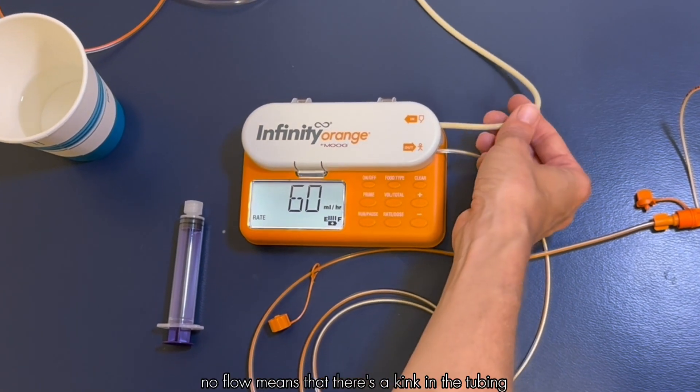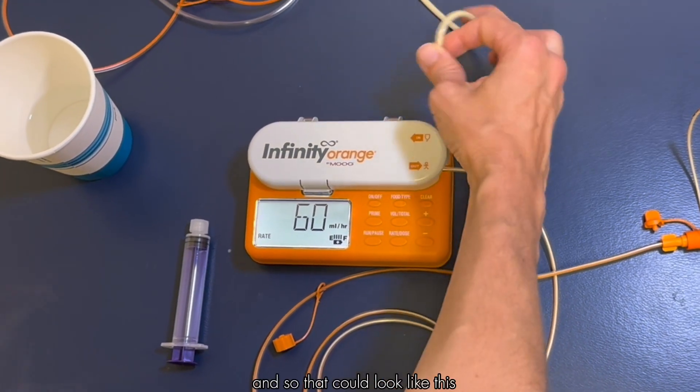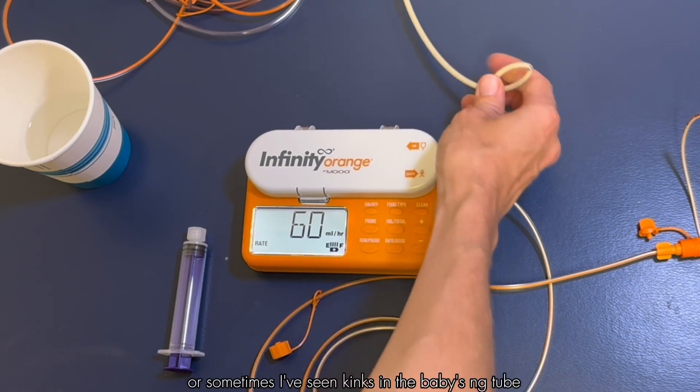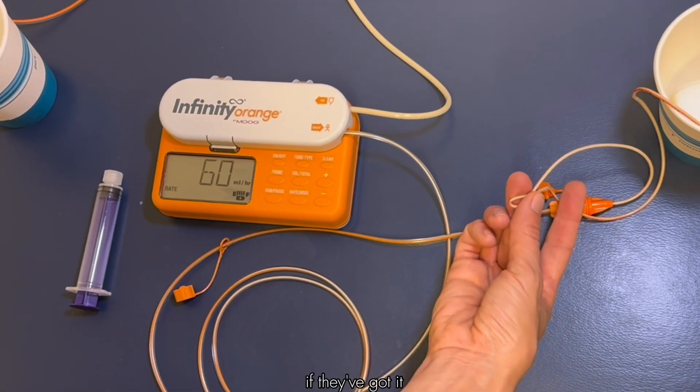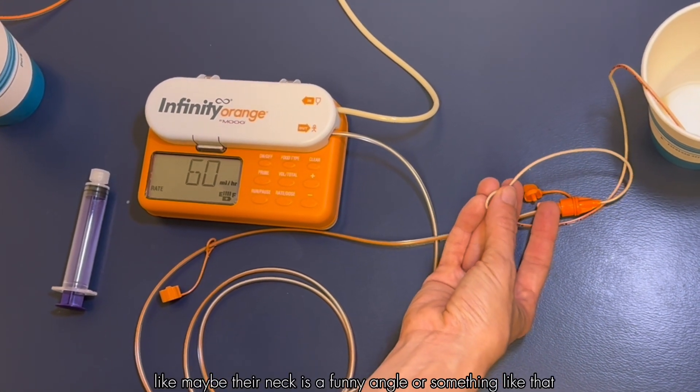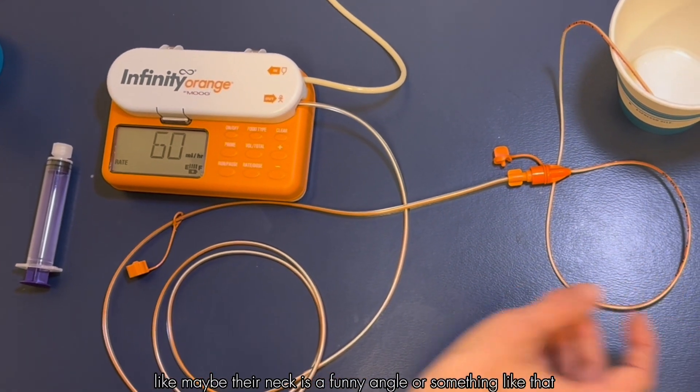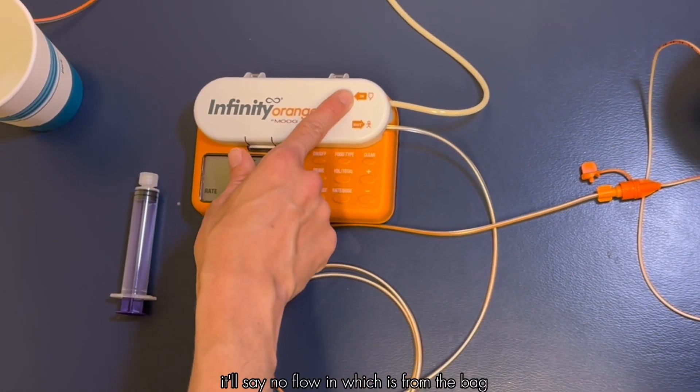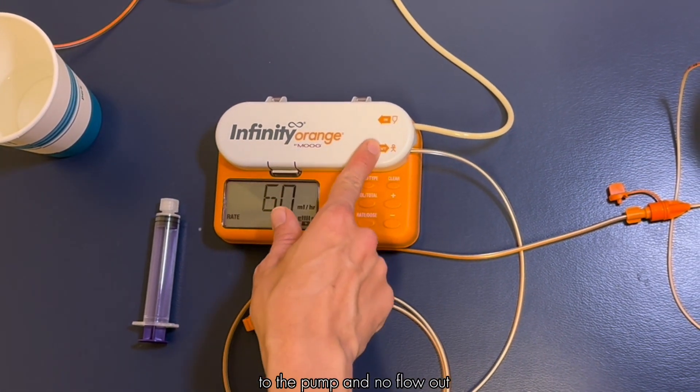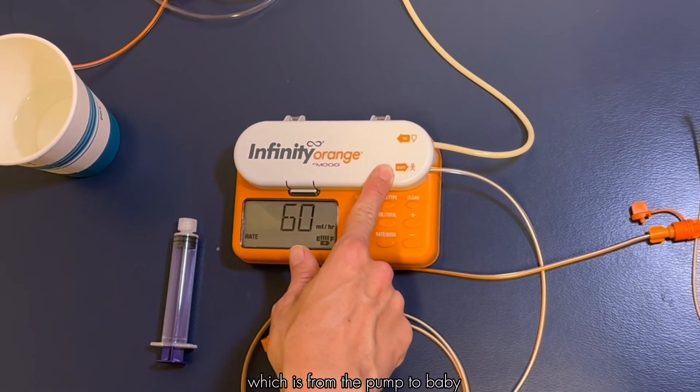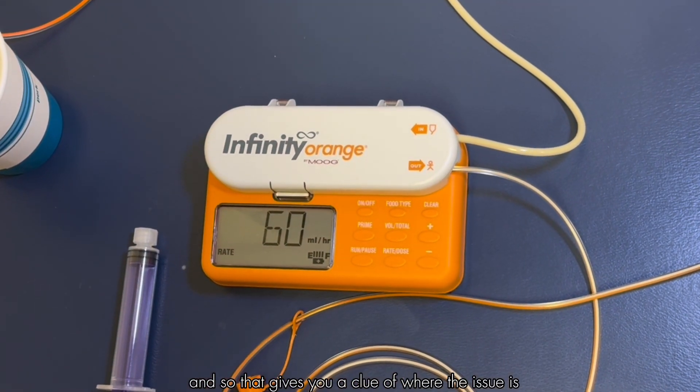No flow means that there's a kink in the tubing and so that could look like this, or sometimes I've seen kinks in the baby's g-tube if they've got it like maybe their neck is a funny angle or something like that. They'll say no flow in which is from the bag to the pump, and no flow out which is from the pump to baby, and so that gives you a clue of where the issue is.